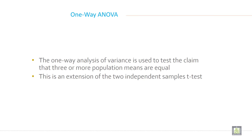One way ANOVA. One way analysis of variance. The one way analysis of variance is used to test the claim that three or more population means are equal.